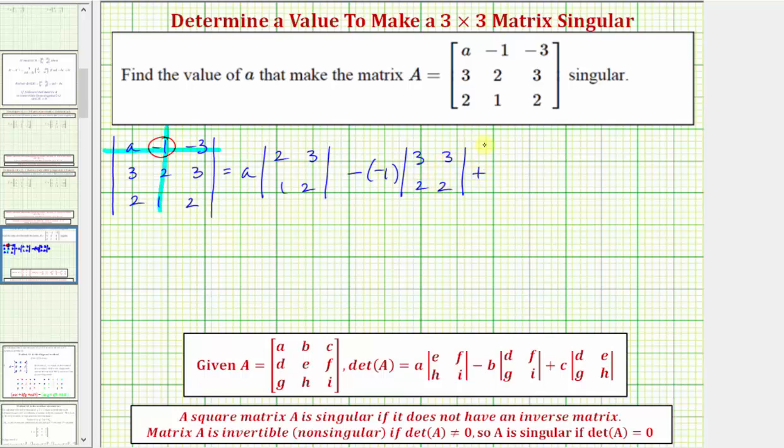Then we have plus. The last element in row one is negative three. So we have plus negative three times another two by two determinant. To find the elements in this determinant, we eliminate the row and column of negative three, which would be row one, column three. So we have three, two, two, one.